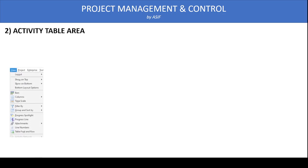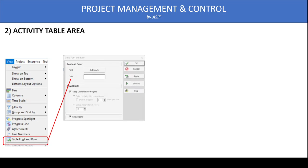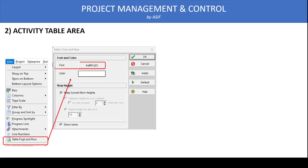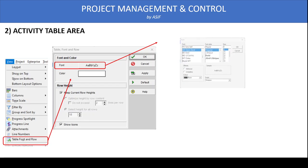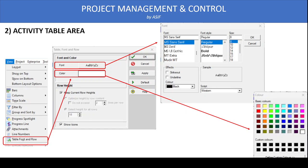The second area is the activity table, which contains information like activity name, duration, dates, and other data. When we need to modify the font size and color in the activity area, we go to View and select Table Font and Row. Once we select that, the Table Font and Row dialog box opens. From here we select Font, which opens the font dialog box where we select the font size, name, and color — the same way we did for the WBS banner.